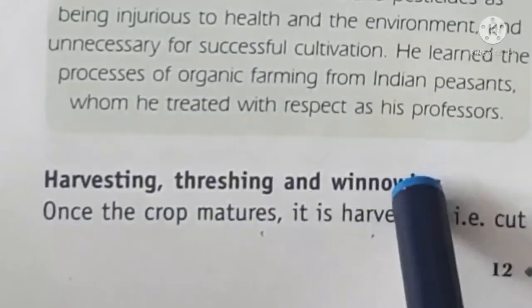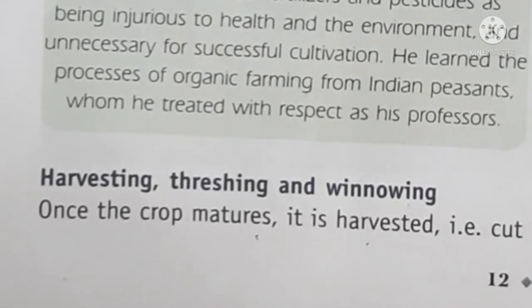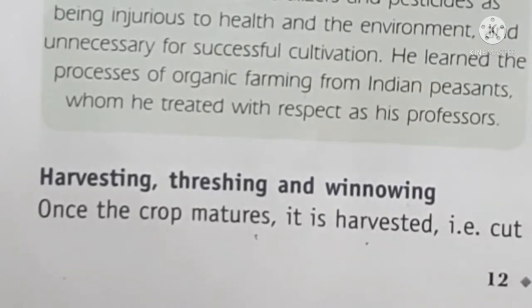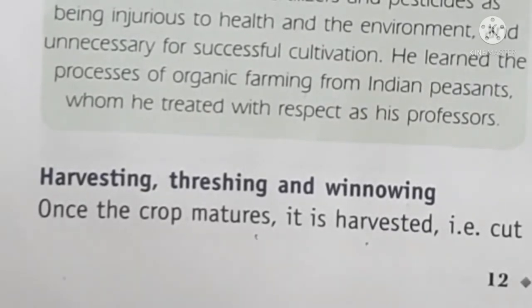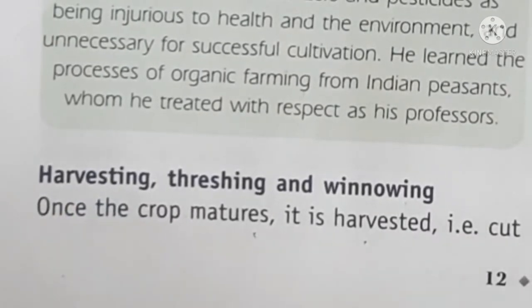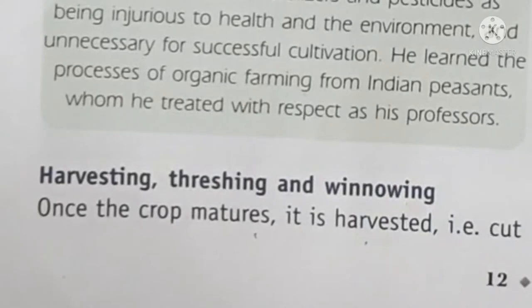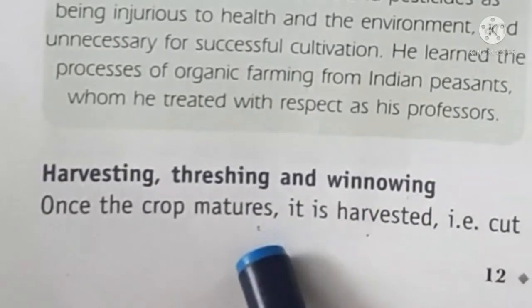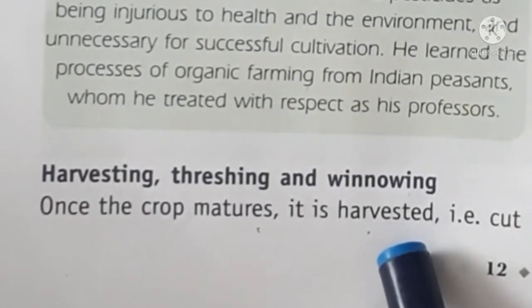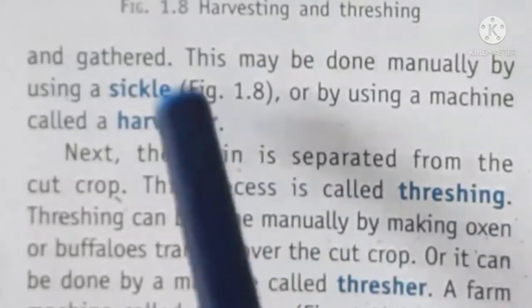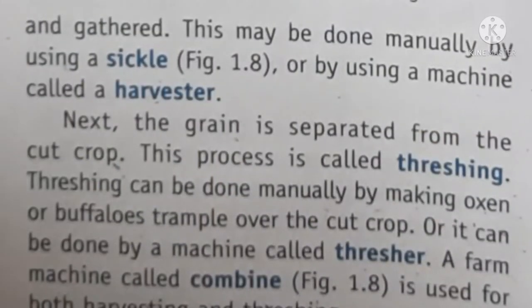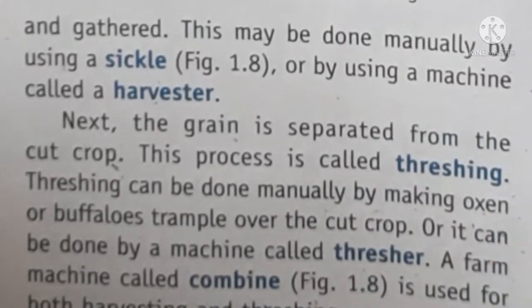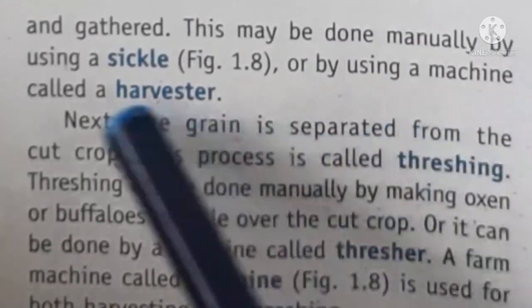The next topic is harvesting and winnowing. After weeding and protecting crops from disease, the next step is harvesting. Harvesting means cutting the mature crop, then threshing and winnowing to get the final grain. This can be done manually using a sickle — called 'asua' in Hindi — but it takes time. If you have acres of field, machines called harvesters are used.